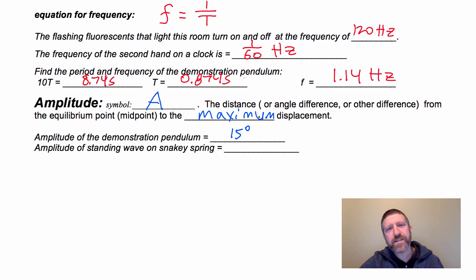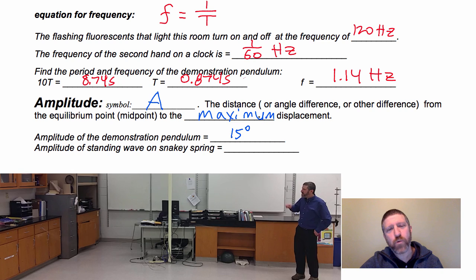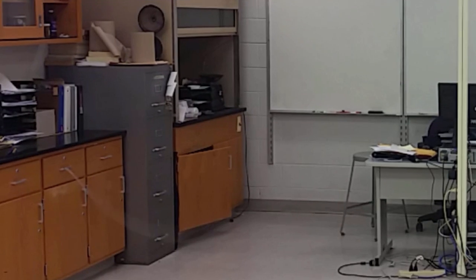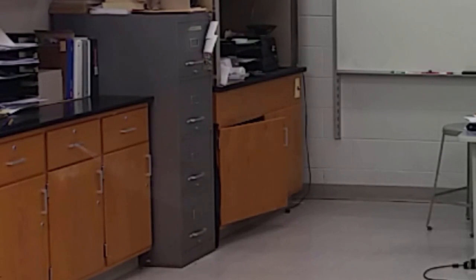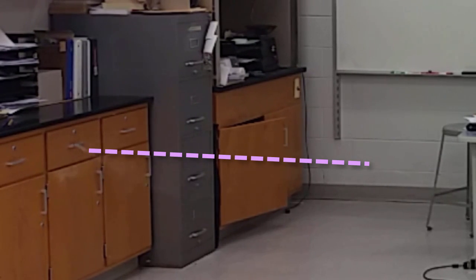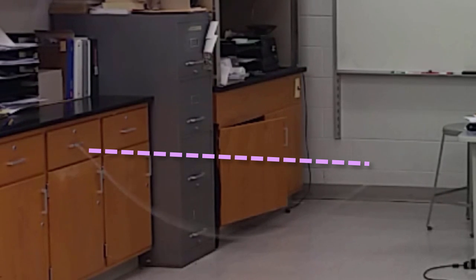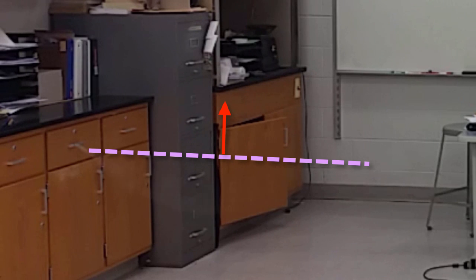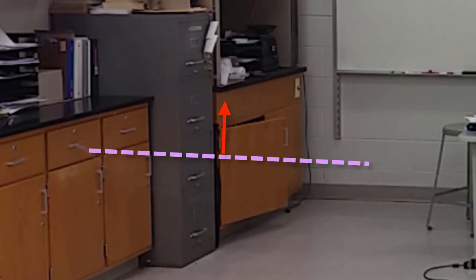The amplitude of a standing wave on a snaky spring — here's an example of a standing wave, and we'll talk more about this later. Let's measure the amplitude of that right now. First we have to figure out the midpoint or equilibrium point, which is going to be right in the middle. The next thing we have to do is measure to the maximum displacement, because sometimes you don't know exactly where the equilibrium point is.